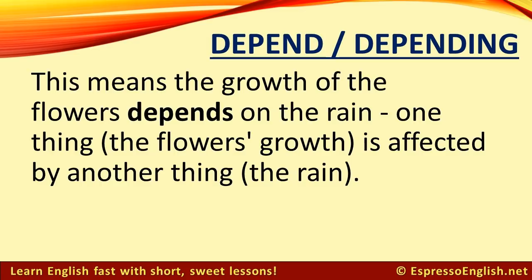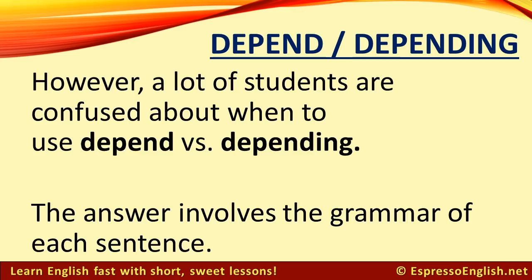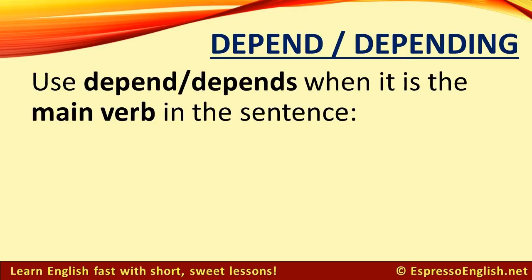One thing — the flower's growth — is affected by another thing: the rain. However, a lot of students are confused about when to use depend vs. depending. The answer involves the grammar of each sentence. Use depend or depends when it is the main verb in the sentence.